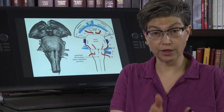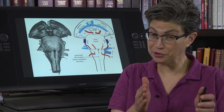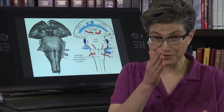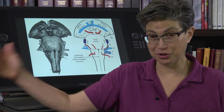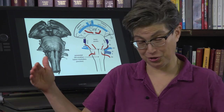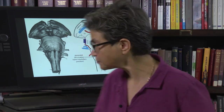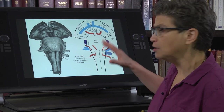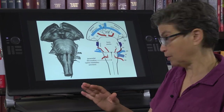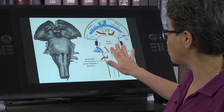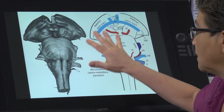Before we start looking at cross-sections — and we are going to look at cross-sections going from the back of the medulla, the spinal-medullary junction, all the way to the junction of the midbrain and diencephalon — let's look at the external landmarks. We're going to start right now with the ventrum of the brainstem.